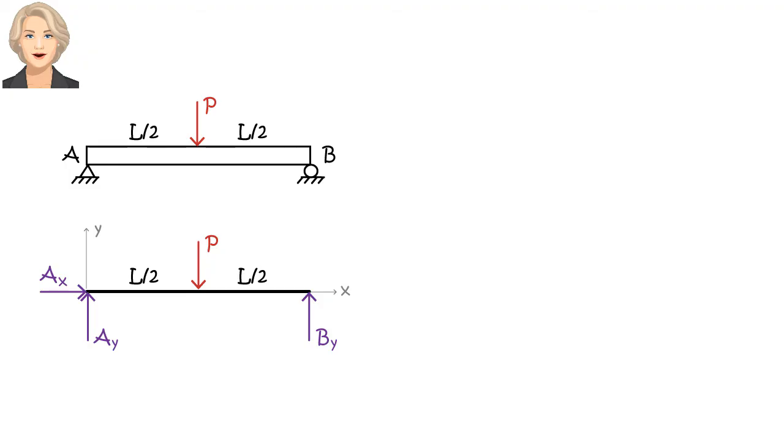To determine the support reactions, that is, to analyze the beam, we use three equations. 1. Sum of the forces in X direction must be zero. 2. Sum of the forces in Y direction must be zero. 3. Sum of the moments about Z axis at any point, say at point A, must be zero.